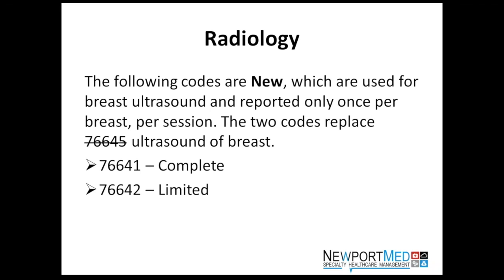Radiology CPT 76645, ultrasound of the breast, has been deleted and is now broken into two codes. 76641 is for a complete study — the review of all four quadrants of the breast. 76642 is limited — anything less than the four quadrants.